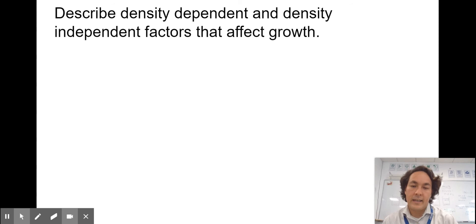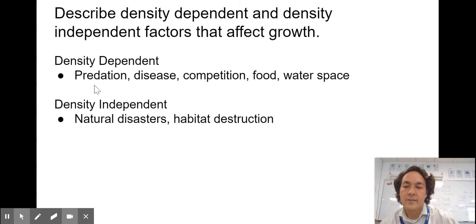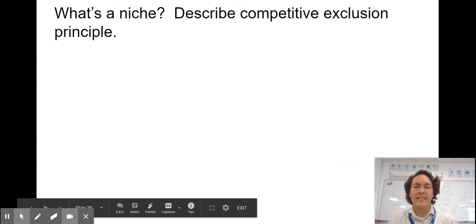Carrying capacity is influenced by different factors. Can you describe density dependent and density independent factors that affect carrying capacity? Density dependent depends upon the population size. It might be things like predation or disease or competition between them, food or water or space. Things that are density independent is like what's going on in the Western United States right now, these terrible fires and natural disasters and habitat destruction.